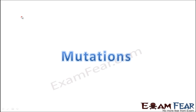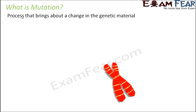Mutations are changes which lead to variations in the next generation. Till now we saw that recombination is one cause of variation — it brings new combinations to the next generation. Mutation is another thing which can cause variation in the next generation. Mutation is a process that brings about a change in the genetic material.